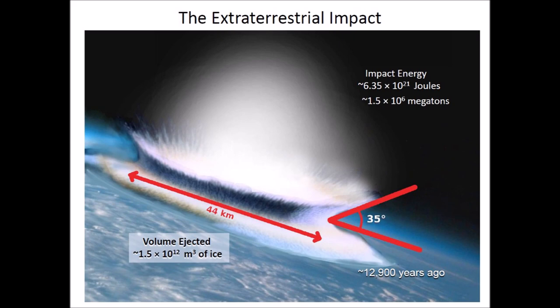This is one order of magnitude less than the 10 to the 7th estimate given in the Firestone paper. The kinetic energy of 1.5 million megatons corresponds to a stony asteroid with a diameter of 3 kilometers, or to a faster comet with a diameter of 2 kilometers. The combined volumes of the glacier ice projectiles also provide an estimate of the volume of ice ejected and the size of the circular area containing this volume of ice. These calculations underestimate the energy of the extraterrestrial impact because now we know that there are more than half a million Carolina Bays.